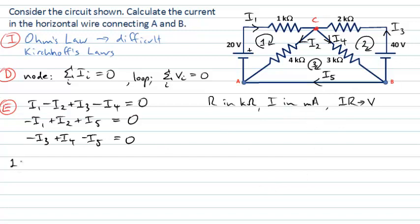Let's begin with loop number one. I'll start at the voltage source, going from the low potential to the high potential side — picking up 20 volts. Then I go through the 1 kΩ resistor in the same direction as I1, so that's a drop: minus I1 × 1. Continuing from point C down to point A through the 4 kΩ resistor in the direction of I2, there's another drop: minus 4 × I2. Returning to the start, that sum equals zero: 20 − I1 − 4I2 = 0.